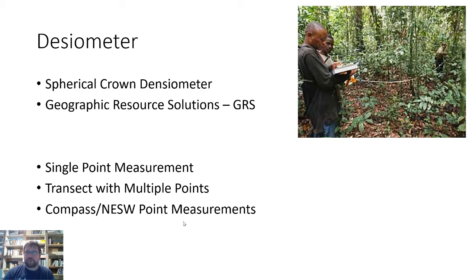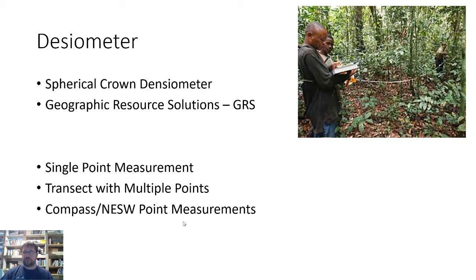Next you're going to see a video of me carrying out canopy cover measurements — it's fairly simple. Again, these are often run in conjunction with a bunch of other data so you can get an idea of the overall health and density of the forest. It can tell you, for example, if a tree is removed, how much that's going to open the forest and what canopy cover that single tree was providing. Watch the rest of the video — I'm using the GRS Geographic Resource Solution densiometer to carry out canopy cover measurements.